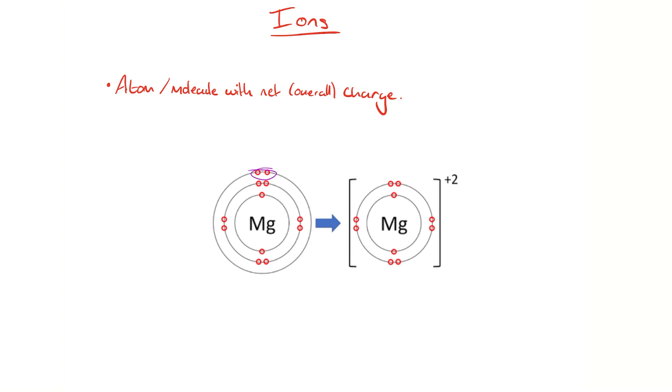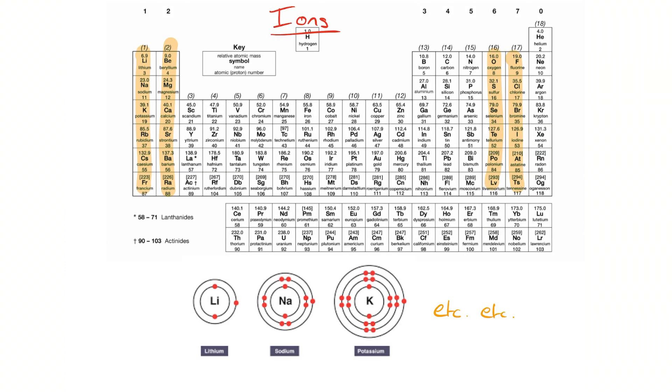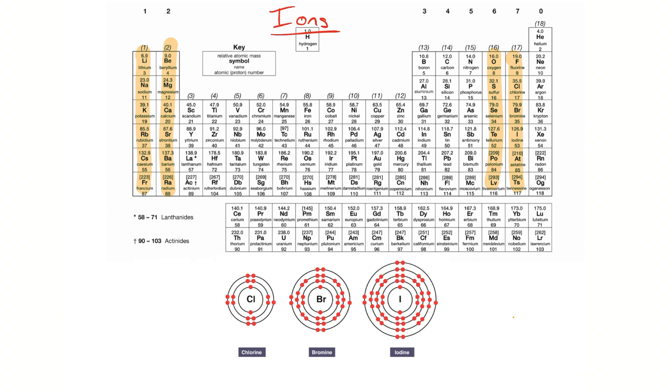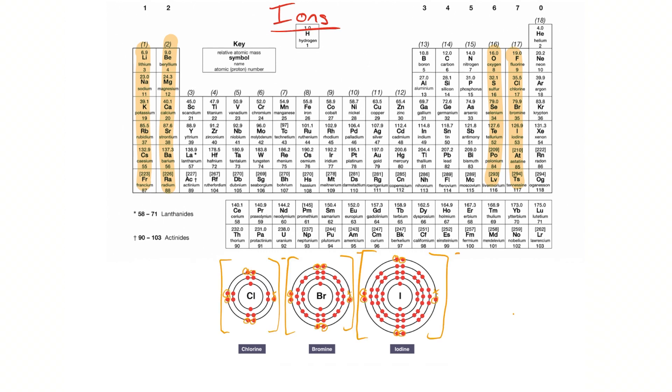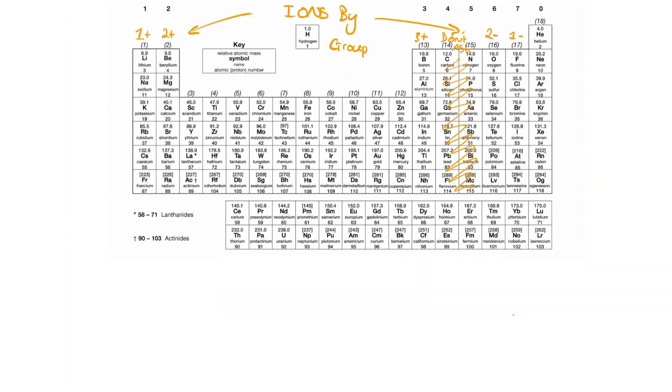You don't have to just remember what ions different elements form. In fact, if you look at the table, at least for a vast majority of the main group elements, it's actually very obvious. All of group one looks like this. All of them have got one outer electron, so they're all going to lose one outer electron to form a one-plus ion. If we look at group seven on the other hand, you can see there's seven outer electrons, so obviously they're going to gain one to get the full eight. If we look at group two, all of them have got two outer electrons, so they're all going to lose two to form a two-plus ion.